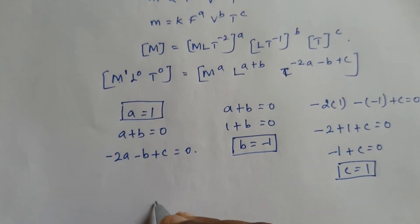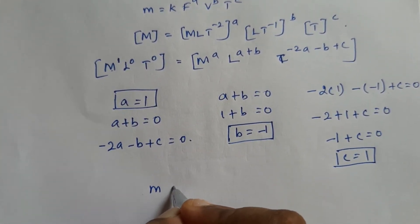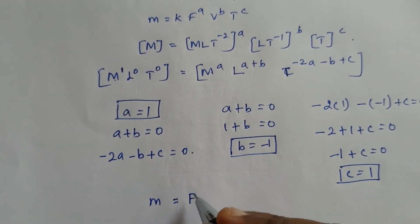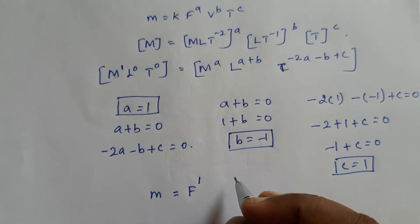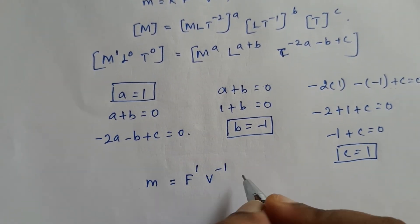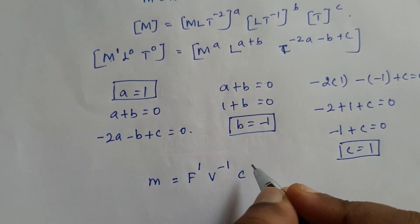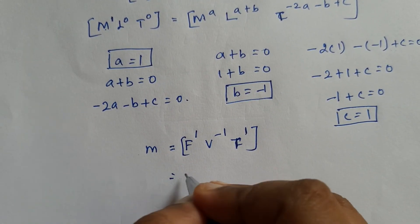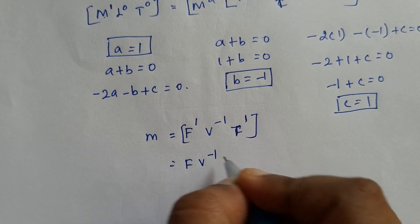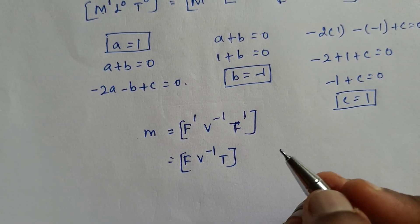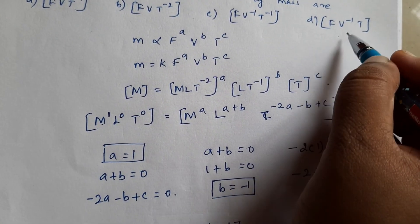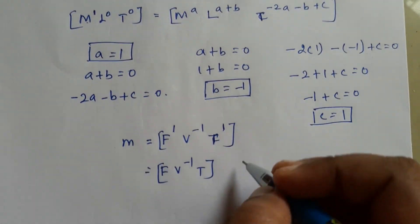Now we substitute: m = F^a · v^b · t^c. With a = 1, b = −1, c = 1, we get m = F · v⁻¹ · t. So the answer is option D: F · v⁻¹ · t.